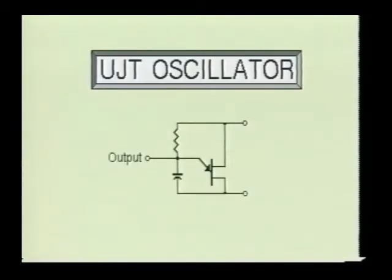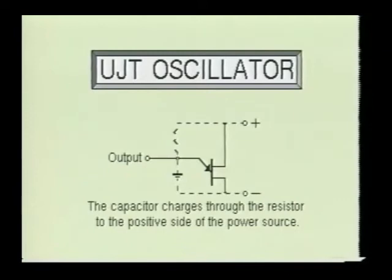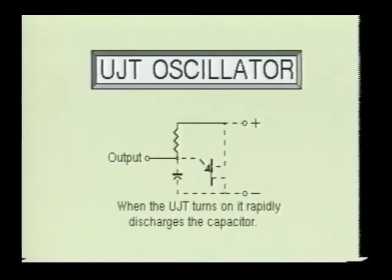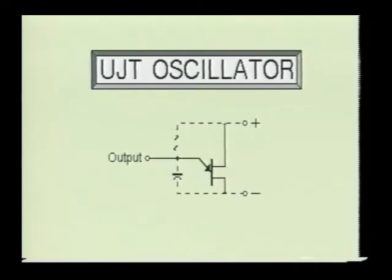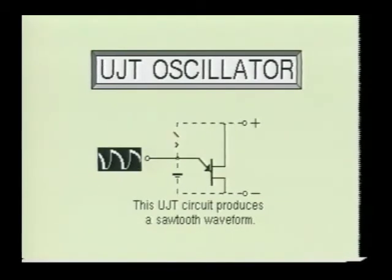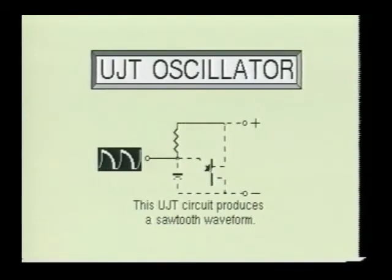Here we see the unijunction transistor in a relaxation oscillator circuit. When the circuit is energized, the capacitor charges through the resistor to the positive side of the power source. When the capacitor voltage reaches the peak voltage level of the UJT, the device fires and rapidly discharges the capacitor. Once discharged, the unijunction transistor turns back off and allows the capacitor to charge again. This process will continue indefinitely. The resulting output will be a sawtooth waveform, and the frequency of the oscillator circuit will be controlled by the values of the resistor and capacitor.